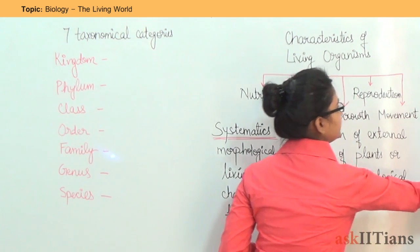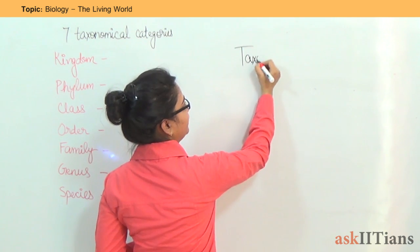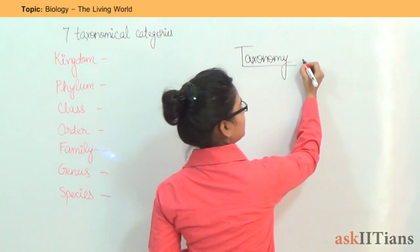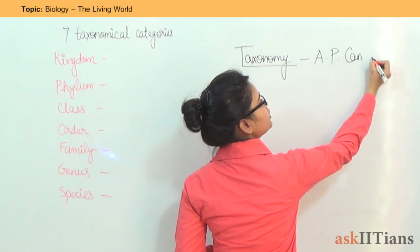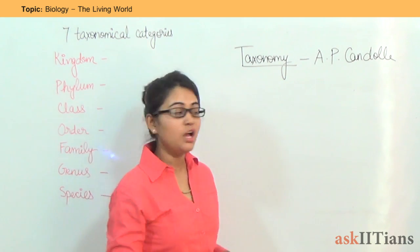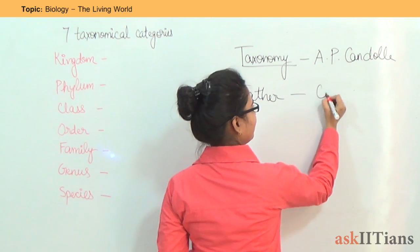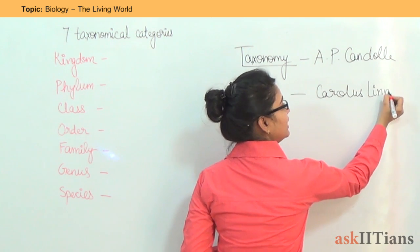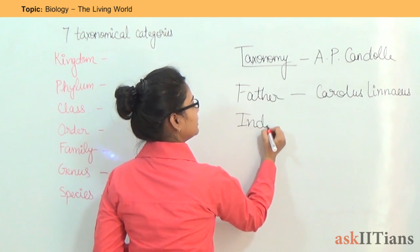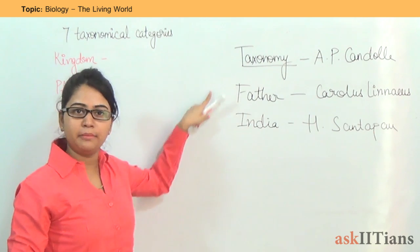Next comes the term taxonomy. Taxonomy is the term that was coined by A.P. de Candolle. A very important fact: the father of taxonomy is known as Carolus Linnaeus. Linnaeus is known as the father of taxonomy, and the father of Indian taxonomy is known as H.S. Santapau. Just remember these three scientists.